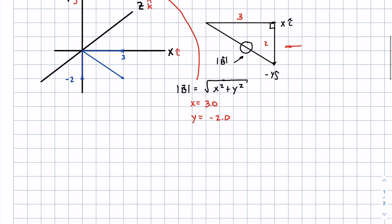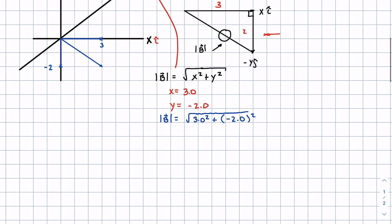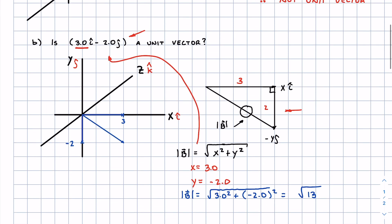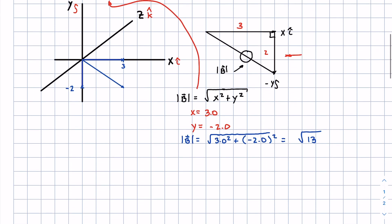We have the magnitude of the B vector is equal to the square root of 3.0 squared plus negative 2.0 squared, which is equal to the square root of 13.0. Now you're asking yourself, is this a unit vector? Well remember...